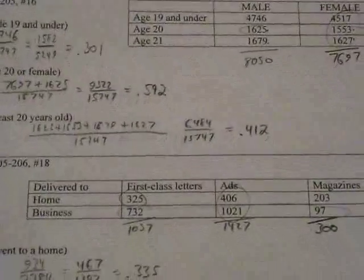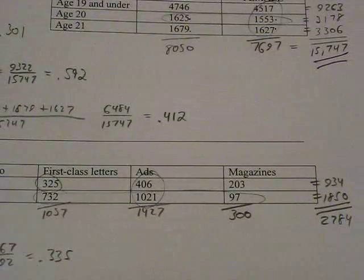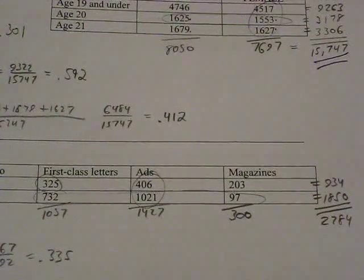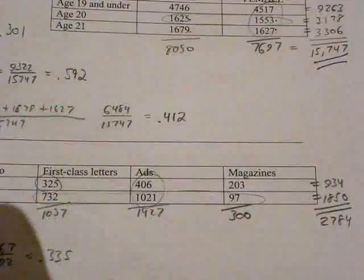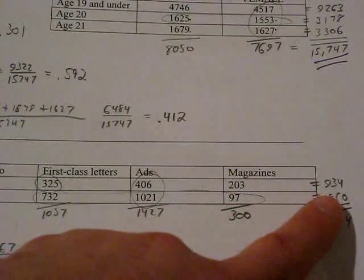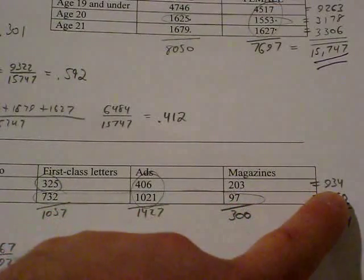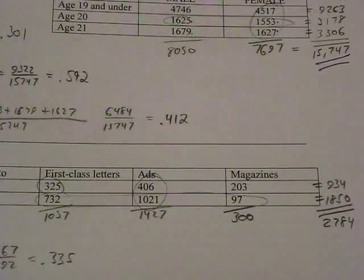Now for the one problem down below you can do the same thing again. I would add up how many first class letters, ads, and magazines were done in each column. And that way you can also add up how many total things were mailed to home and businesses. And then your total of 2,784 is really important. At this time you may want to pause the video and try these problems on your own and see if you can get the answers correct.